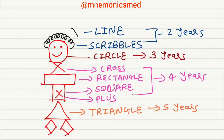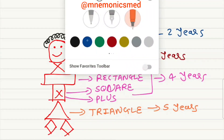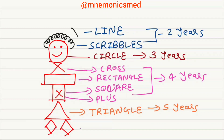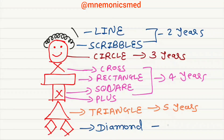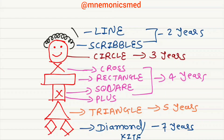Children copy a diamond or kite at the age of seven years. You have to remember: children copy a diamond or kite at the age of seven years. You can easily remember via these diagrams.